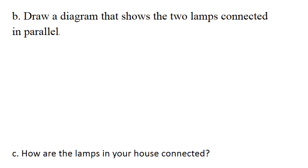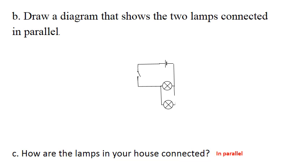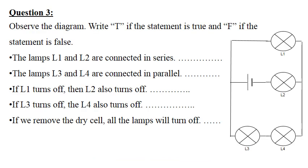Part B — draw a diagram showing two lamps connected in parallel. In parallel, there is branching of the wires with the lamps alongside each other. Part C — in houses, hospitals, and schools, all lamps are connected in parallel, because if one lamp turns off, the others remain functioning.